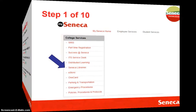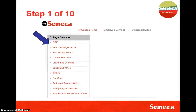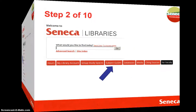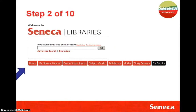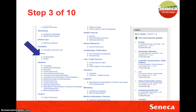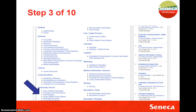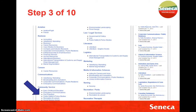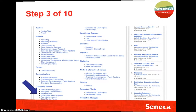So here's how you do it. Step 1: log in to mySeneca and select the Seneca Libraries. Then go to the Subject Guides, and navigate to Community Services and the small area for fire protection.